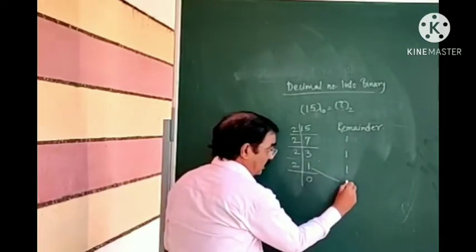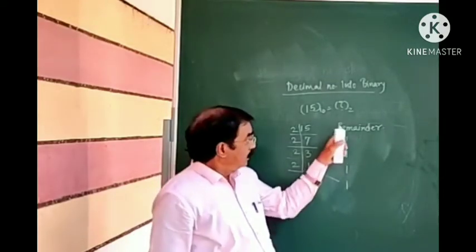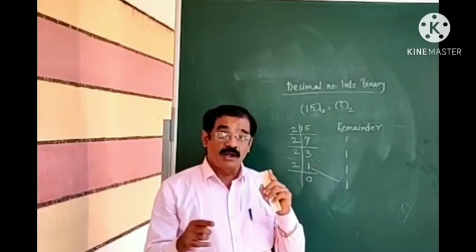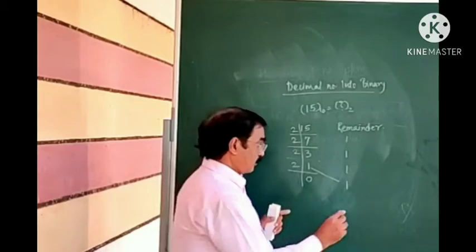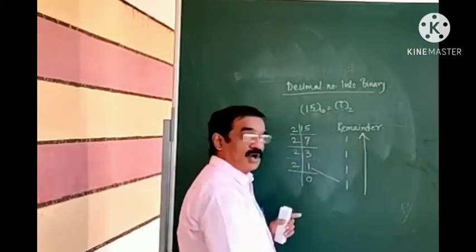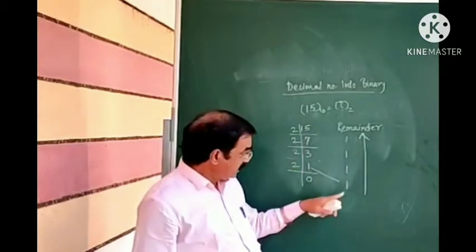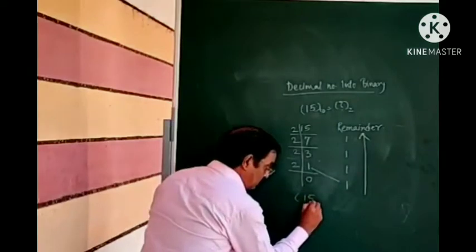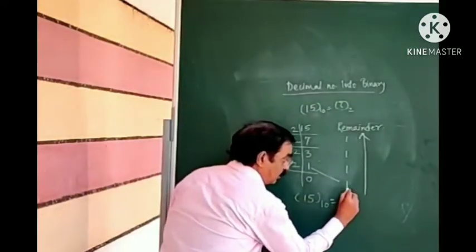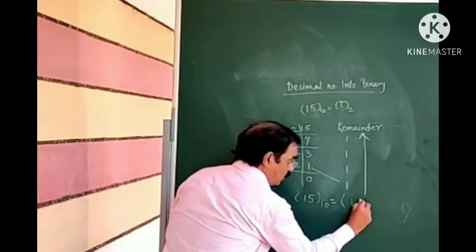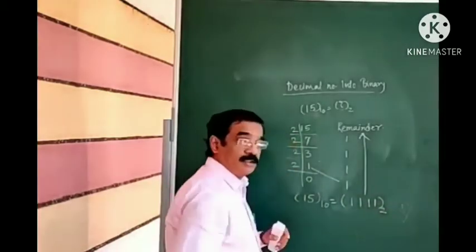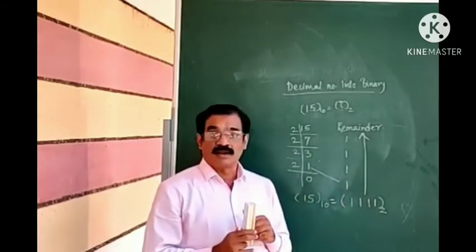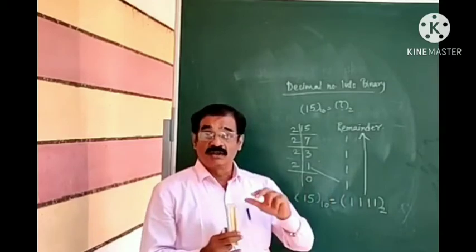Take the remainders from bottom to top. Reading the remainders bottom to top: 1, 1, 1, 1. So 15 decimal is equal to 1111 binary. This is the conversion of decimal to binary.